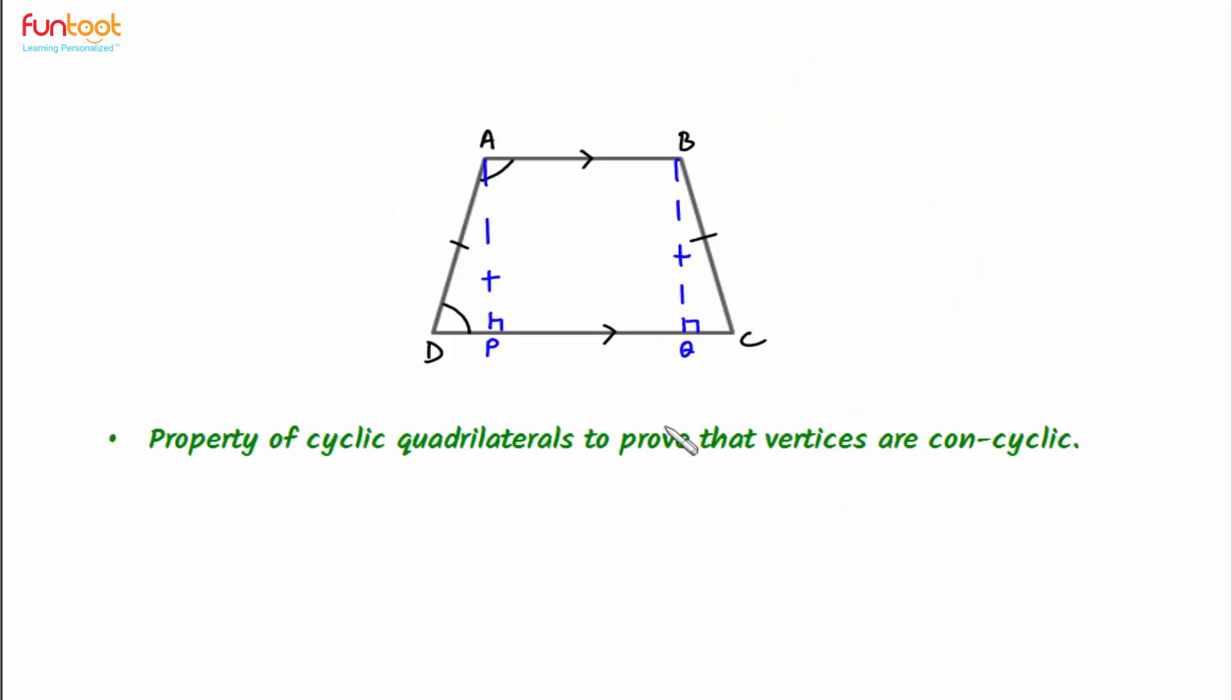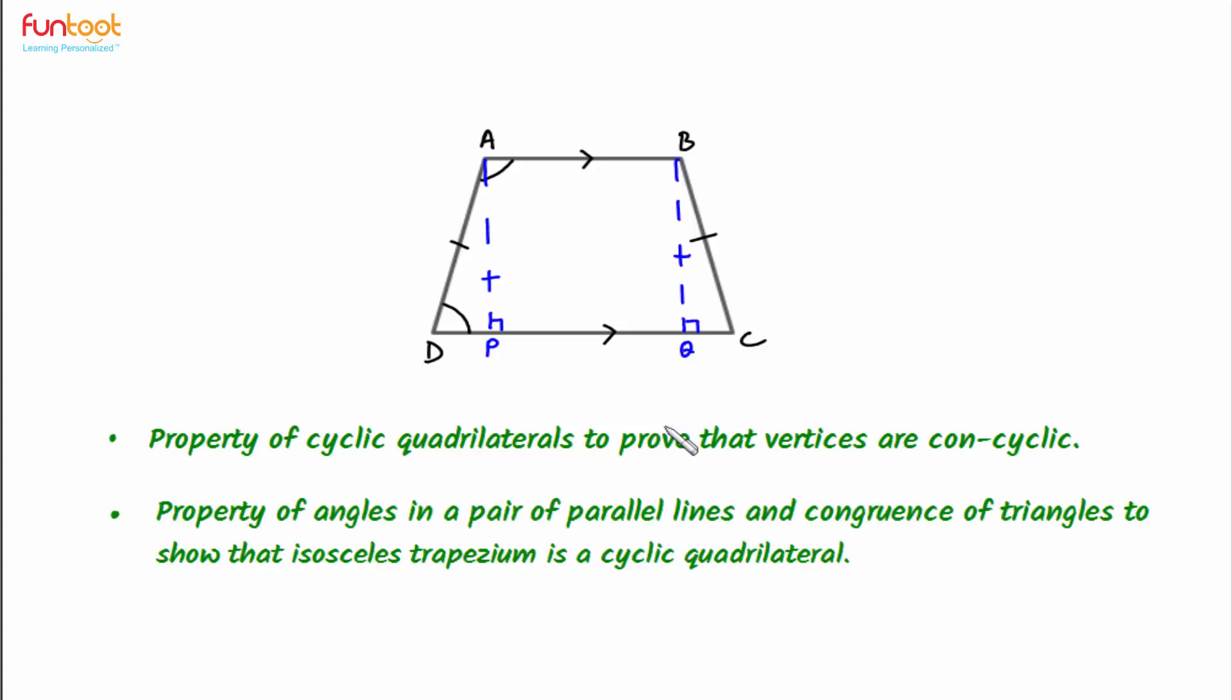So, here we use the properties of cyclic quadrilateral to prove that vertices of an isosceles trapezium are concyclic. For completing the proof, we use the properties of parallel lines and congruent triangles also.